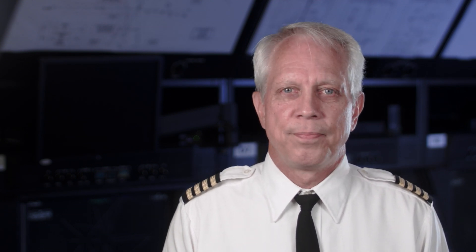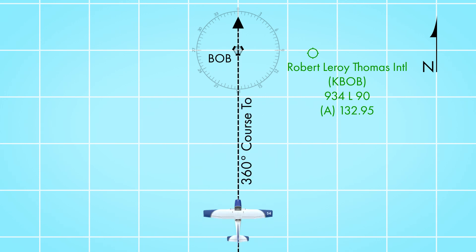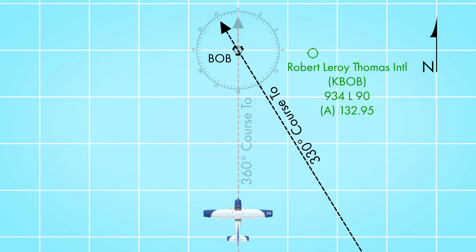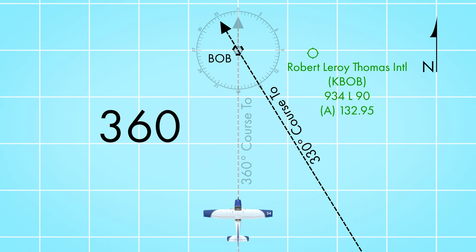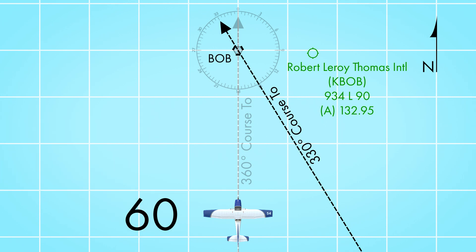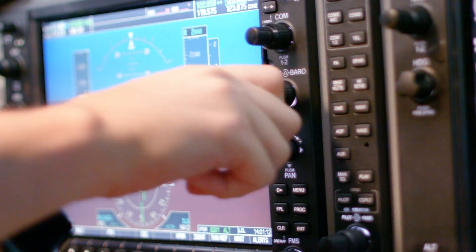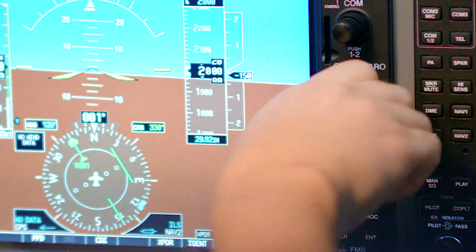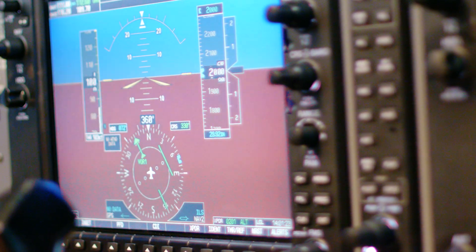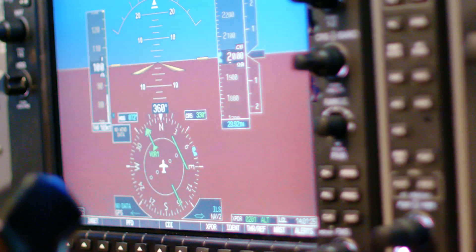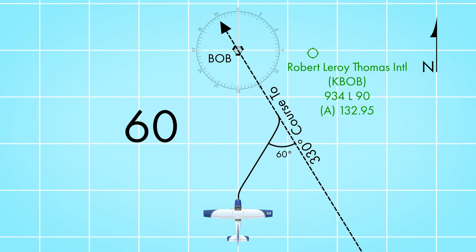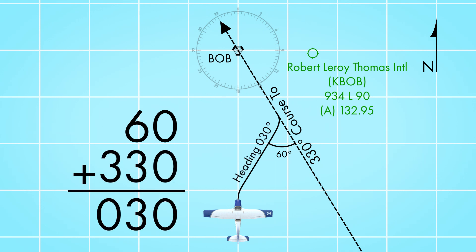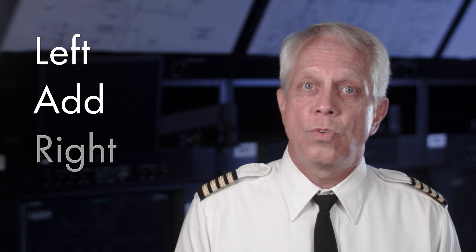Let's look at an example. Right now you have determined that you are on the 360 degree course to the VOR, but you want to be on the 330 course to the station. The course is to the right. 360 minus 330 equals 30 — double that and you've got a 60 degree intercept angle. Rotate the course selector knob to your desired course of 330 and you'll notice the CDI will be to the right-hand side of your miniature airplane, indicating you're left of course. Use the mnemonic LARS as an aid in selecting an intercept angle: Left, Add, Right, Subtract.